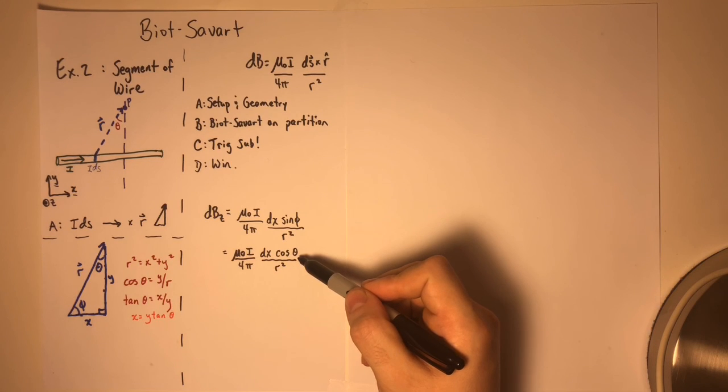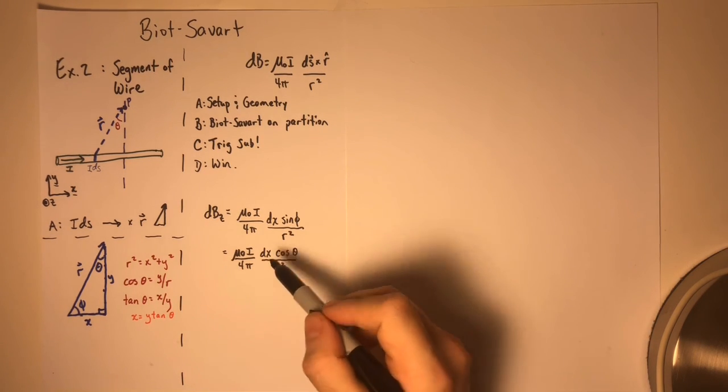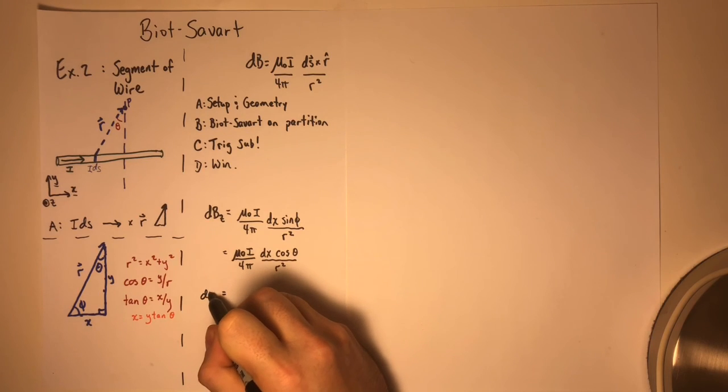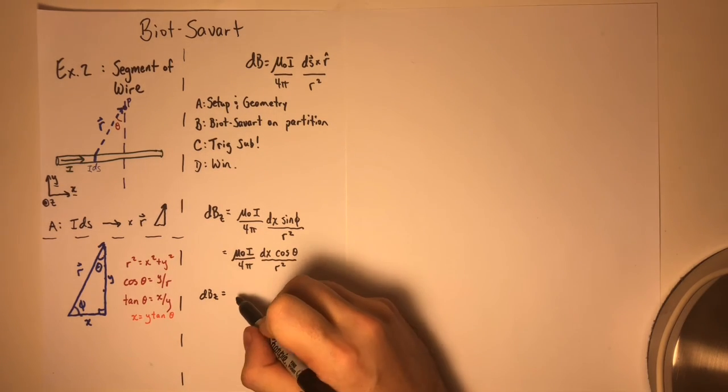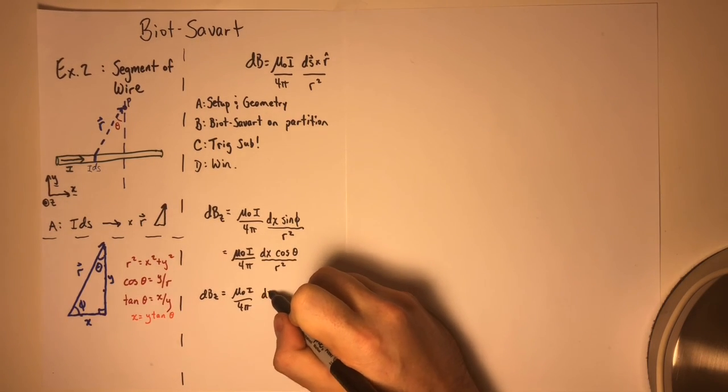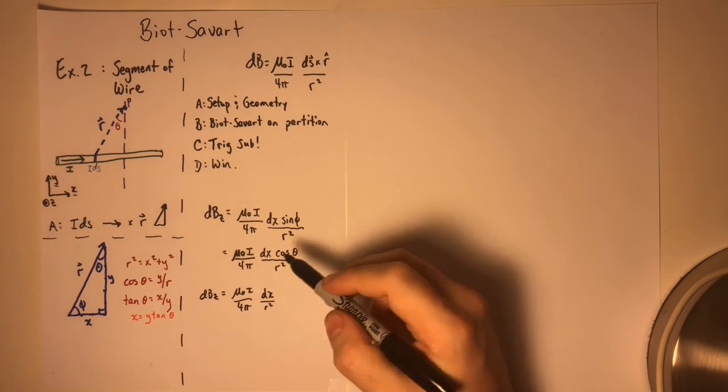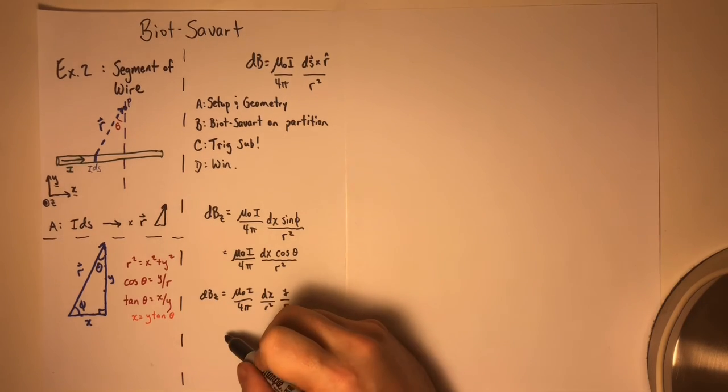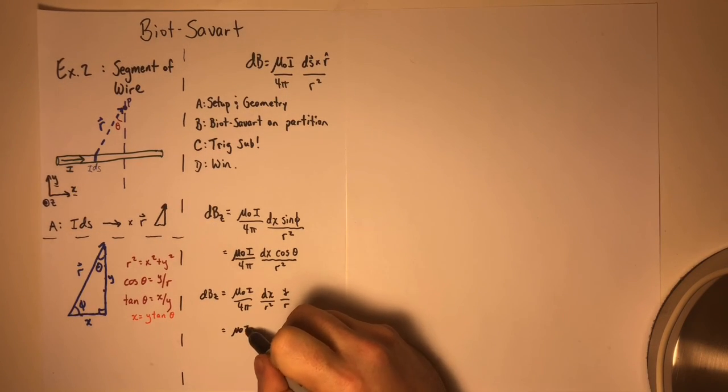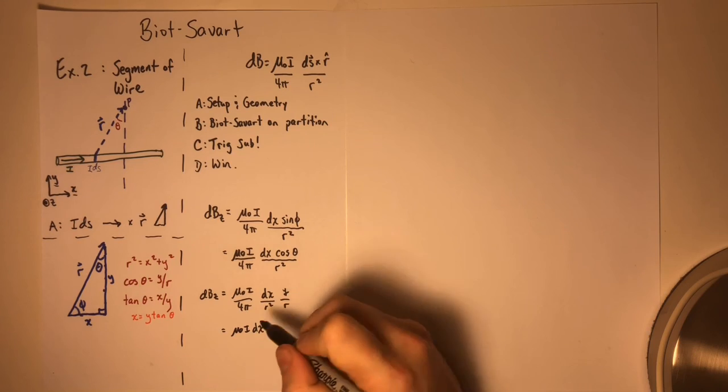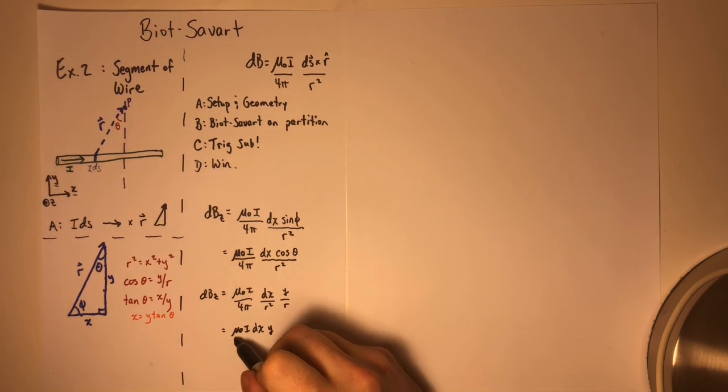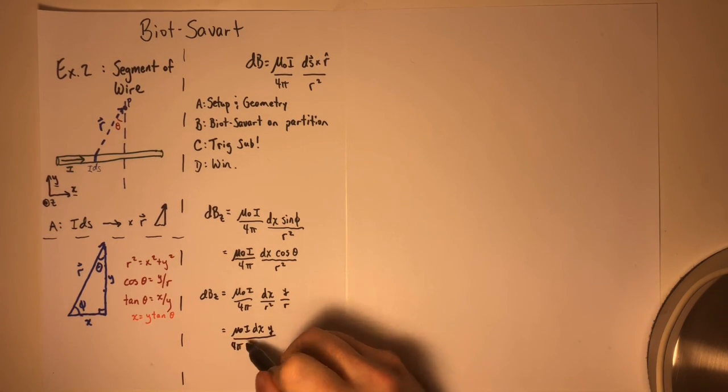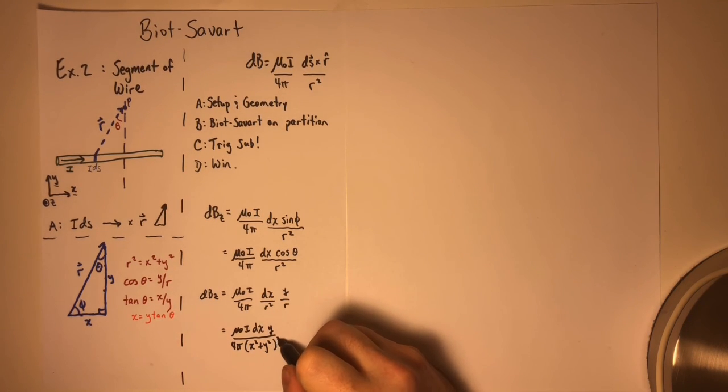So if I replace cosine theta with Y over R, then it's tempting to say that we've got something that looks kind of clean. We end up with dBz component only equals mu naught I over 4 pi times DX over R squared times Y over R. And that gives us mu naught I dx times Y over 4 pi times X squared plus Y squared to the 3 halves.